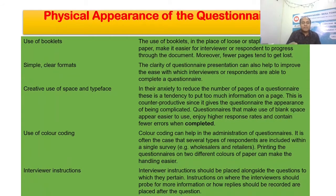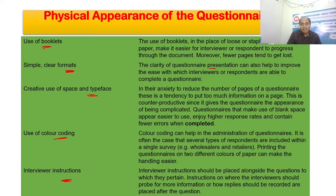Next is the physical appearance of your questionnaire — what you will bring when you go to collect questions from the field. Use booklets with a simple and clear format, and staple your questions together. Use space for writing answers, and use color coding with different colors. Include interviewer instructions upfront — what you are going to instruct your interviewees for the purpose of your research should be stated before asking any questions. These are the physical appearance tools you should use when you go to the field to collect information.